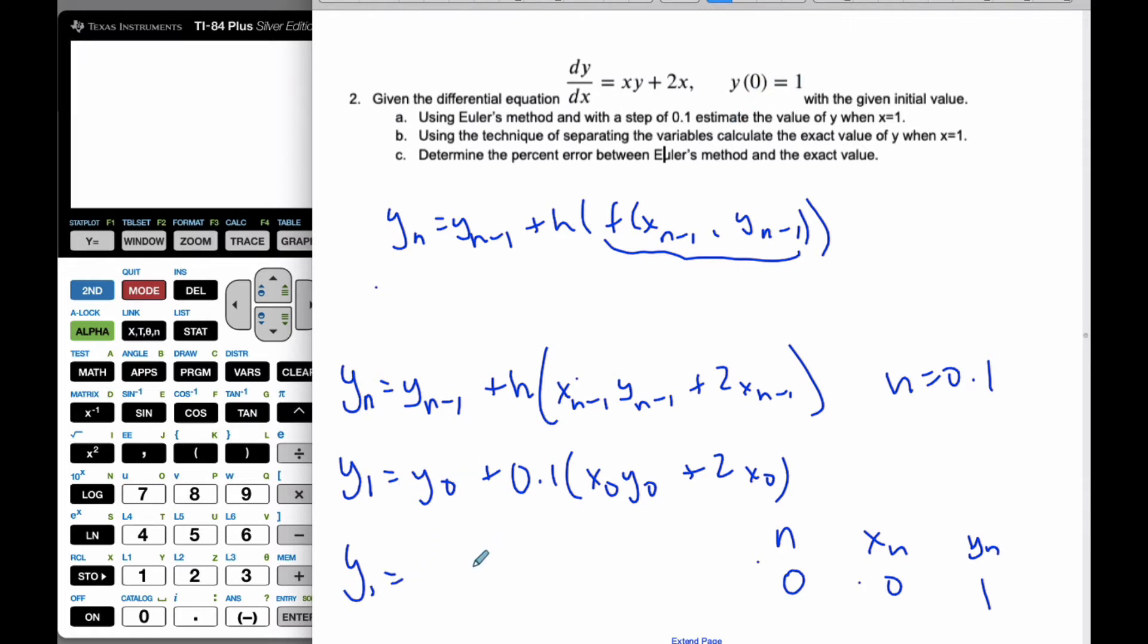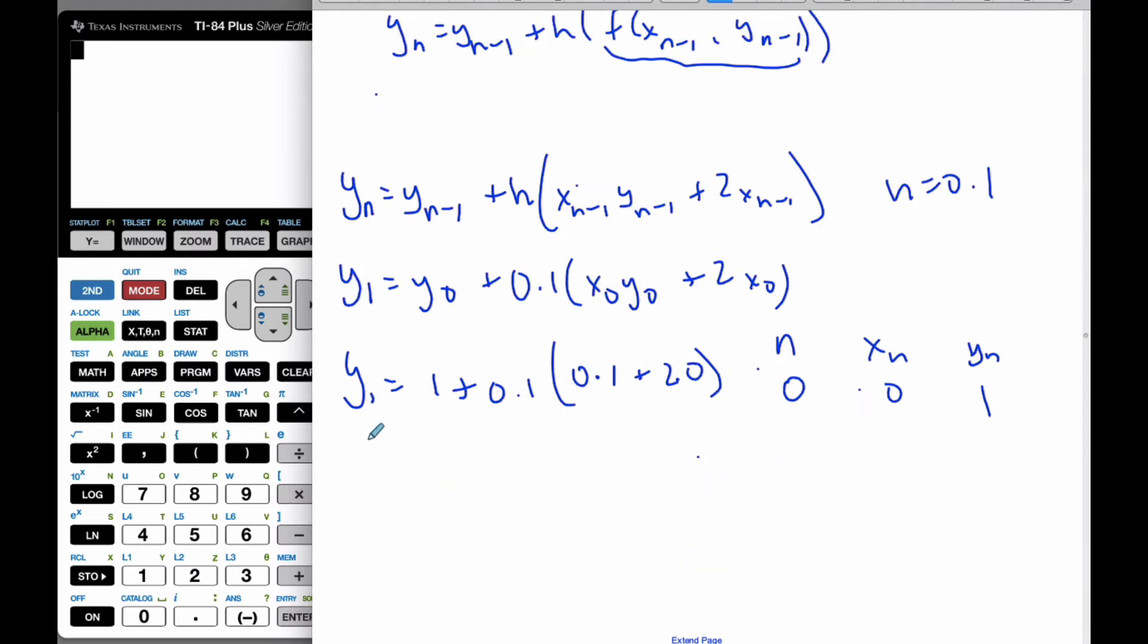So y1 will be then, y0 I know is 1, plus 0.1. And this is going to be 0 times 1, 0 and 1. So y1 plus 2 times x0 is 0. And so then I know that y1 will be 1. Okay, and so but x, I know that x1 is going to be 1, or sorry, 0.1. So when n is 1, I get xn to be 0.1, and y to be 1.